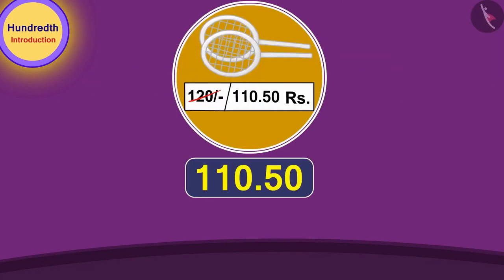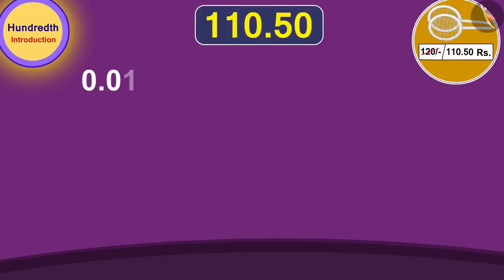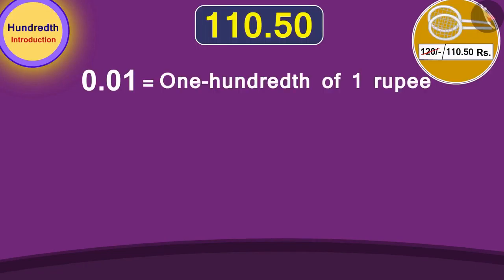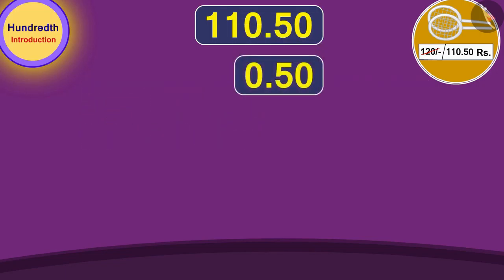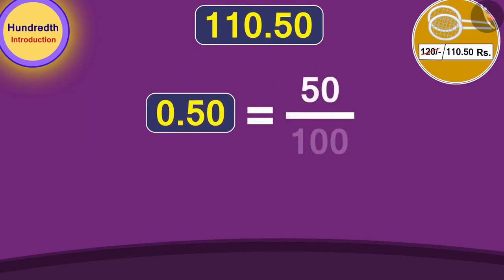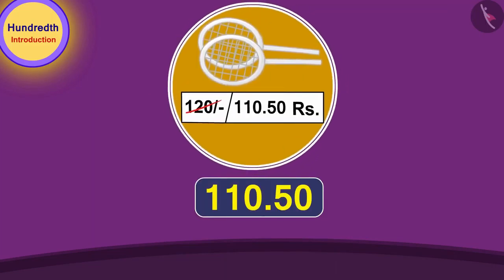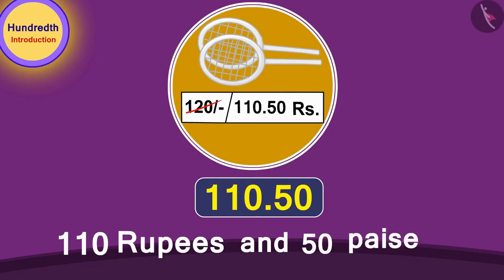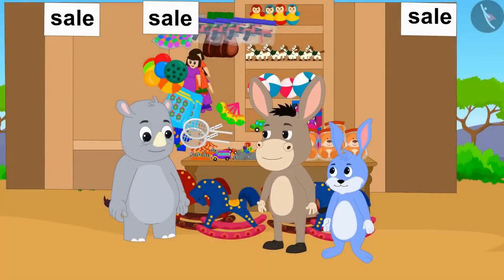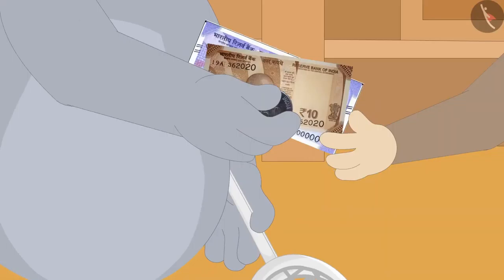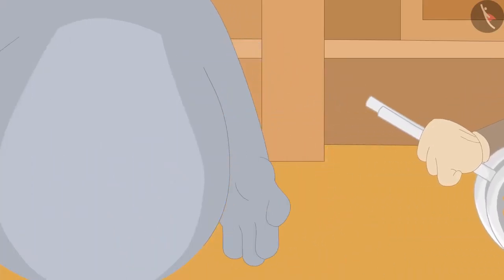The price of the badminton racket is 110.50 rupees. 0.01 rupee or one hundredth of a rupee is equal to one paise. Therefore, 0.50 rupees will be equal to 50 hundredth part of one rupee or 50 paise. In this way, the price of the badminton racket is 110 rupees and 50 paise. Bunny explained to Bholla. Bholla quickly understood and bought the badminton racket by giving 110 rupees and 50 paise to Gaggoo.